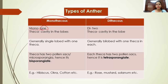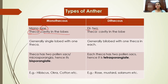The term 'mono' means one and 'di' means two. The term 'thecal' comes from 'theca', which means the cavity present inside the lobe — that is, the empty space present inside the lobe.